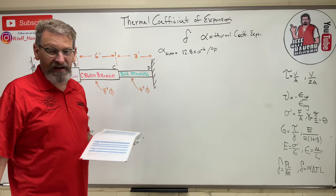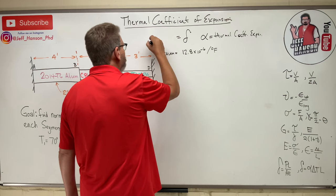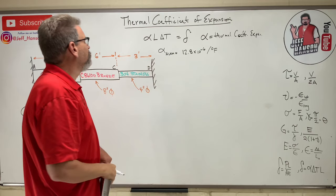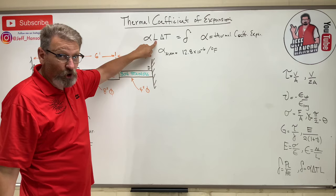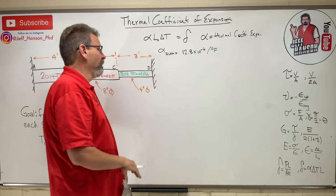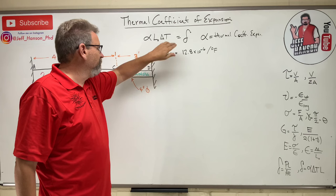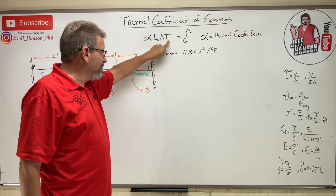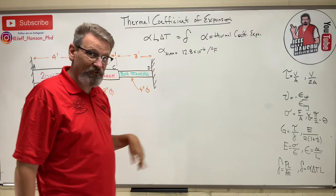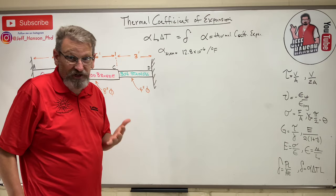Isn't that a weird unit — per degree F? We have a new equation for delta: δ = α·L·ΔT. Alpha is the thermal coefficient of expansion, L is just the original length of the material, and delta T is the change in temperature — that's going to be in Fahrenheit or Celsius depending on SI or US customary units. Those units cancel out and leave you with just a length, which is what delta is — a change in length.